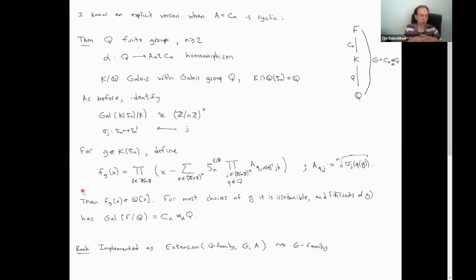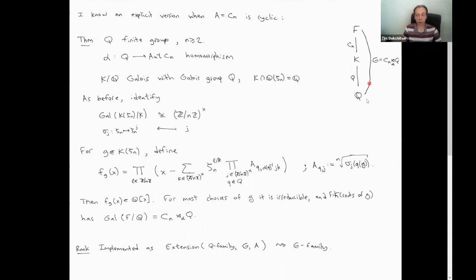If you recall, the way we constructed cyclic groups using Kummer's theory: if you want to construct a family of Cn extensions over the ground field, you join nth roots of unity, then take an arbitrary element of Q(ζ_n), call it G, and look at its nth roots, then hook up some combination of roots of unity and these nth roots in such a way as to get the right Galois group. And it's exactly the same thing here — this is the generalization of that construction, where you have an extra Q extension at the bottom.